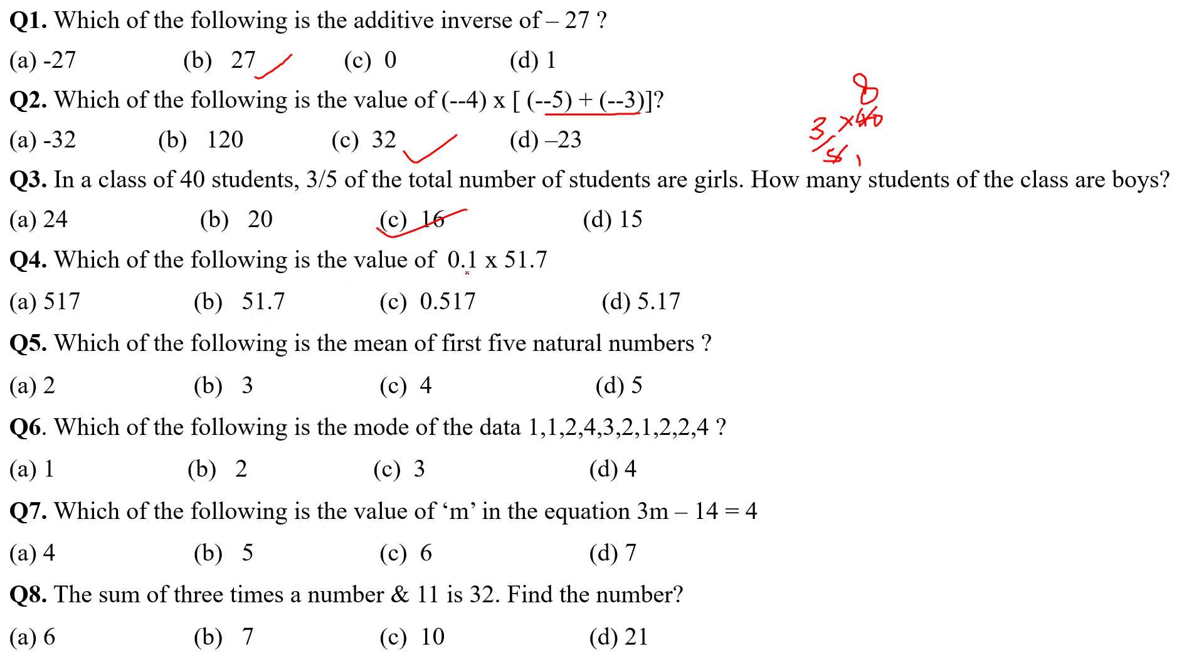Which of the following is the value of 0.1 into 51.7? When you multiply these two numbers, you will get, I am 100% sure, 5.17. Which of the following is the mean of the first 5 natural numbers? I think first 5 natural numbers, 1 plus 2 plus 3, then total will be 15, then divided by 5. So, answer will be B, 3.